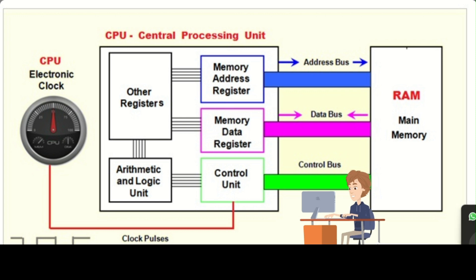The control bus is another type of bus in computer systems alongside the data bus and address bus. Like the data bus, the control bus is a collection of wires that allows different components of a computer system to communicate with each other. However, the control bus is responsible for carrying signals that control the flow of data and the behavior of the system as a whole.